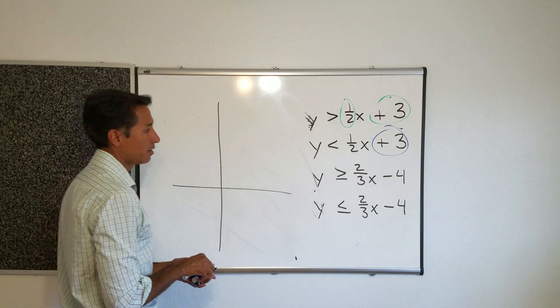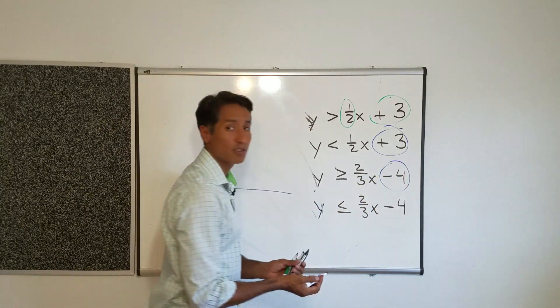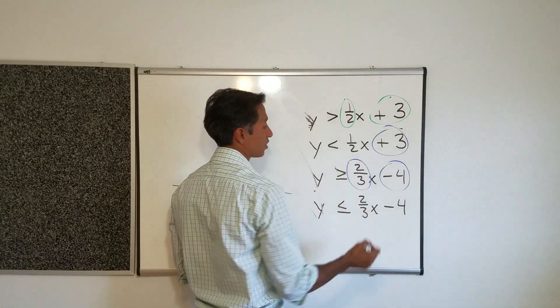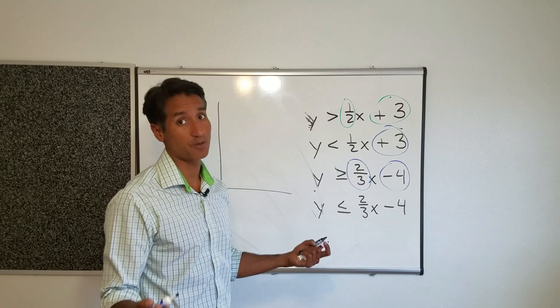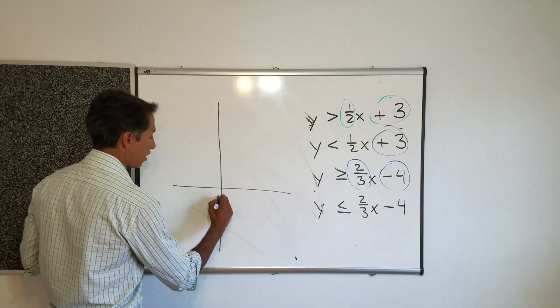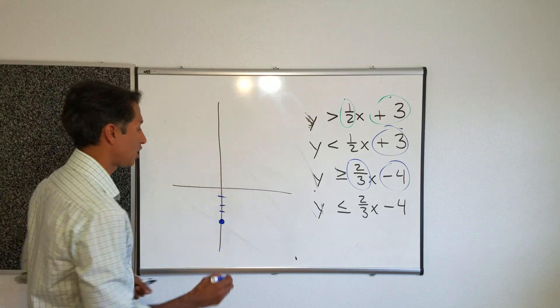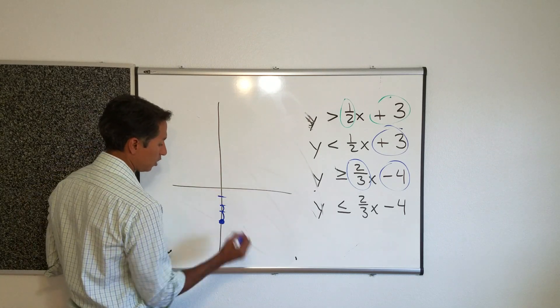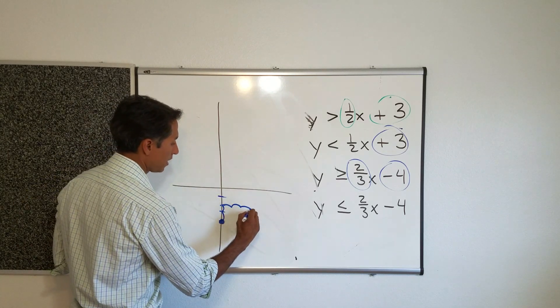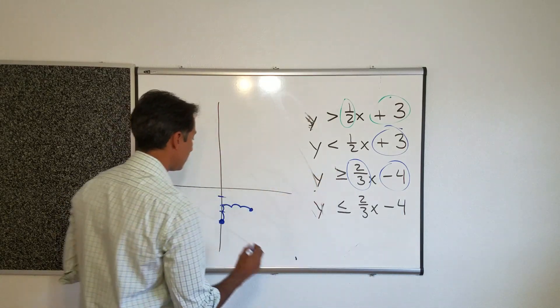Let's see here. What's my starting point on that one? And if you don't circle these, that's okay. I circle them just to remind myself so I get these things right. Negative four, one, two, three, four. Negative four is my starting point. My rate of change is two thirds. So, up two, over three.